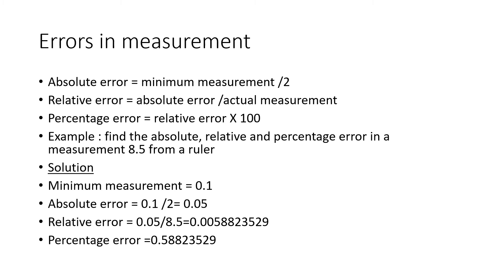Let's look at errors in measurement — measurements from a ruler or any instrument. The absolute error for measurements is given by the minimum measurement divided by two. You determine the minimum measurement from the number of decimal places given. For example, if you have 8.5, the minimum measurement is 0.1. For 8.05 (two decimal places), the minimum measurement is 0.01. So for 8.5, the absolute error is 0.1 divided by 2, which equals 0.05.